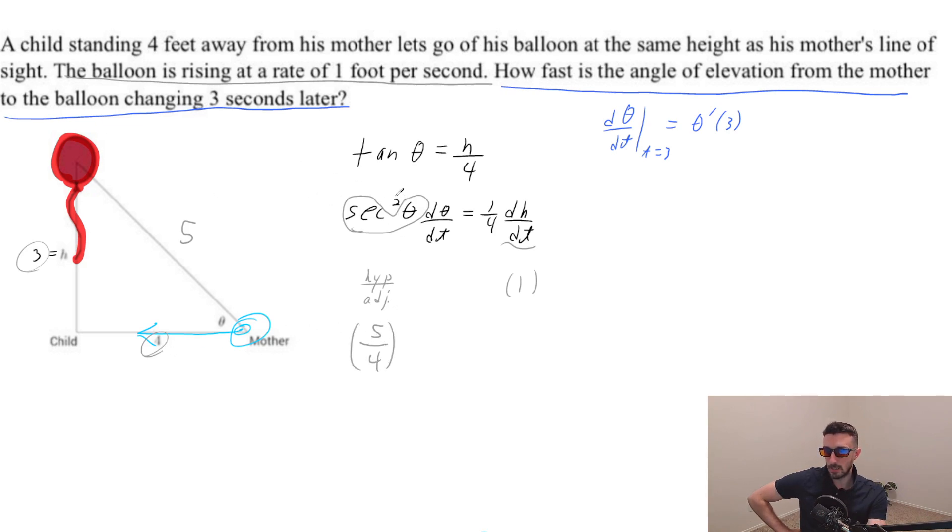And because it's secant theta squared, then I'm going to be squaring that times d theta dt equals one-fourth times one. So that gets you one-fourth.